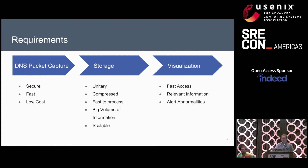Each of the stages or layers has some requirements. For the capture layer, we wanted it to be secure, fast, and low cost, because being so close to the DNS servers, we are very limited in the resources we have. For the storage layer, we want it to be granular — able to see every packet separated from each other so we can analyze independently — decompressed, fast to process, and scalable, because we are adding more load every day. Finally, for the visualization, we want fast access, relevant information, and some type of alerting for different abnormalities that can happen.